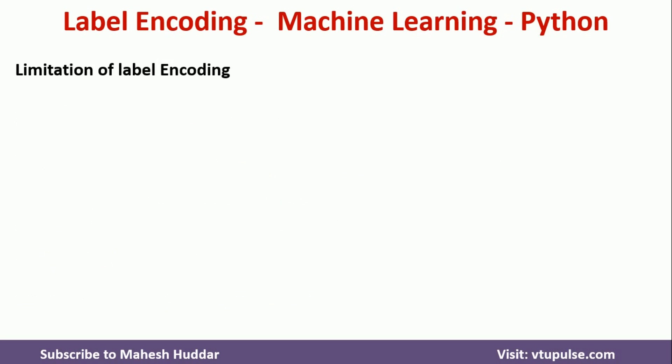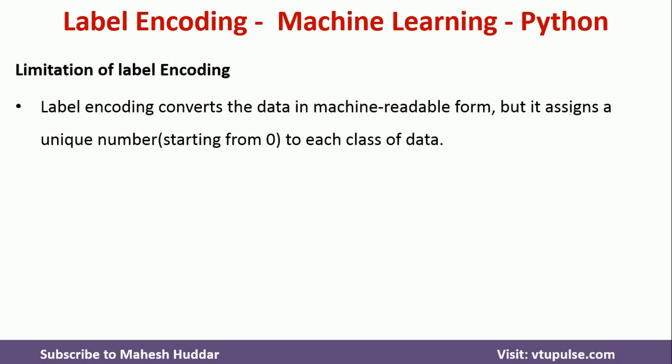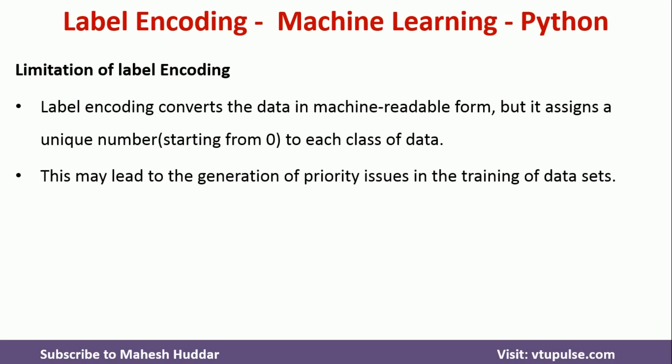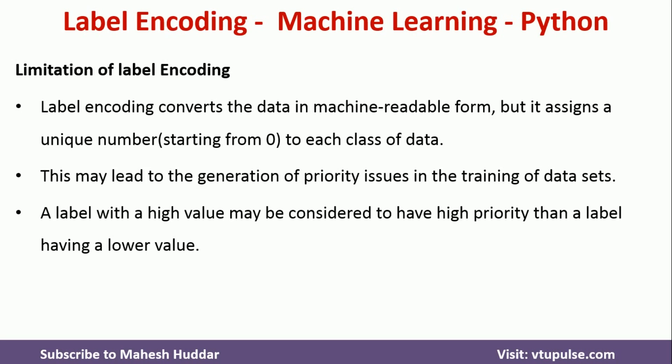Now there are some disadvantages with label encoding. What label encoding does is convert the labels into numeric values starting from 0 — for 3 labels it gives 0, 1, 2, and for 10 labels it gives 0 to 9. The problem is that machine learning algorithms may interpret these numeric values as having a priority or ordering — value 0 being low priority and the maximum value being high priority — which is a big problem.